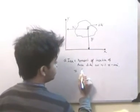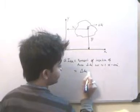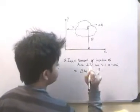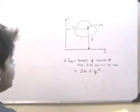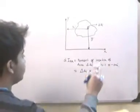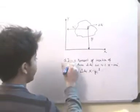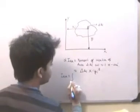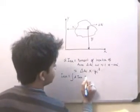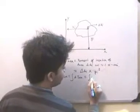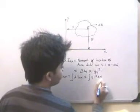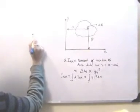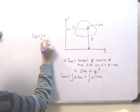dIXX is the moment of inertia of area delta AI with respect to the X axis, and this is essentially equal to delta AI into YI whole squared. So if you define the moment of inertia of this whole body with respect to the X axis, what we do is basically integrate this. IXX is the moment of inertia of the whole body with respect to the X axis, and this is equal to the integration of YI squared dA. Similarly, we can write IYY to be equal to the integration of XI squared dA.